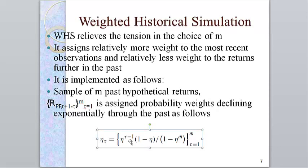Here at the bottom, we have the weighting function. Each return is weighted depending on whether tau equals 1 or tau equals M. For more recent returns, tau equals 1, the weight is very large. For returns M days apart, 250 or 1,000 days, the weight is much lower.